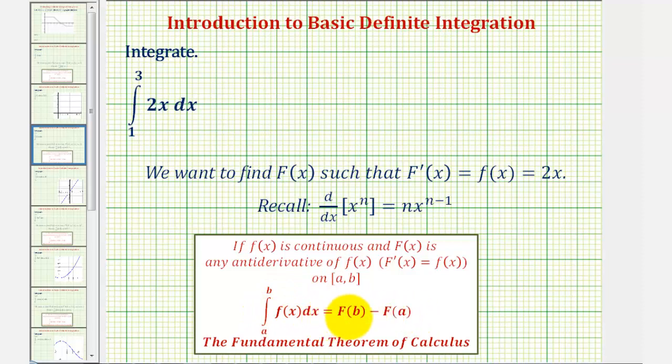by using the antiderivative function F(b) minus F(a). So very soon we'll have integration and antiderivative formulas to use, but for right now, let's find our antiderivative using what we know about derivatives. We want to find a function F(x) such that its derivative equals the integrand function 2x.